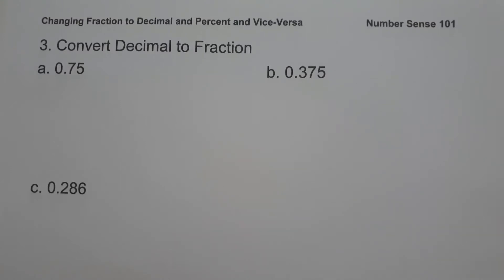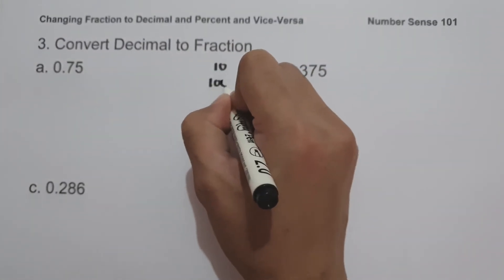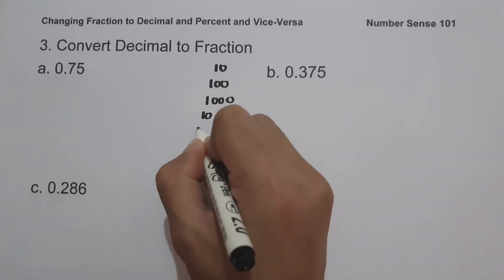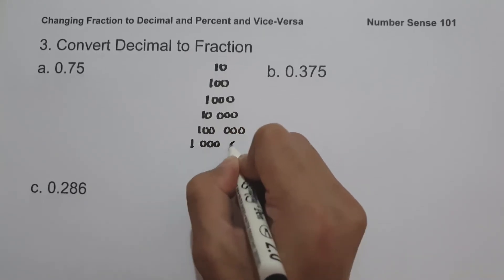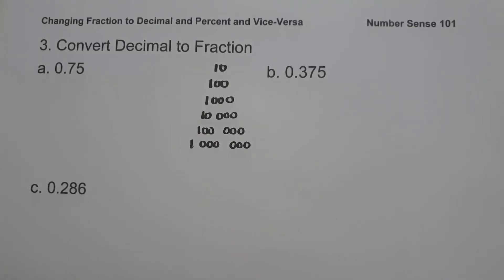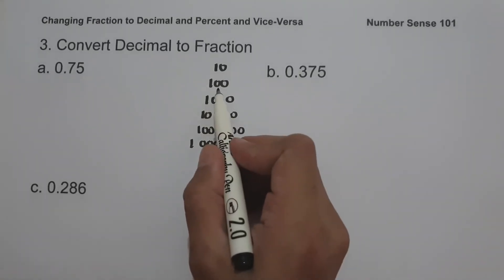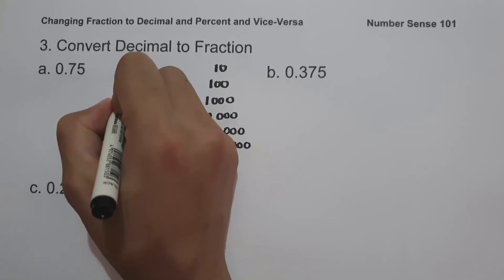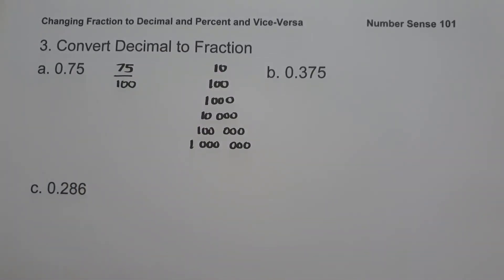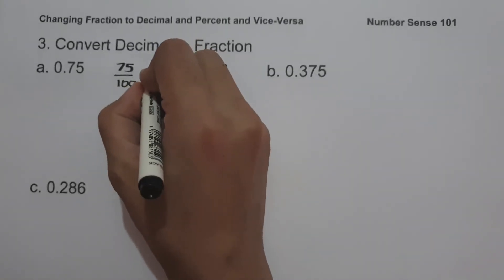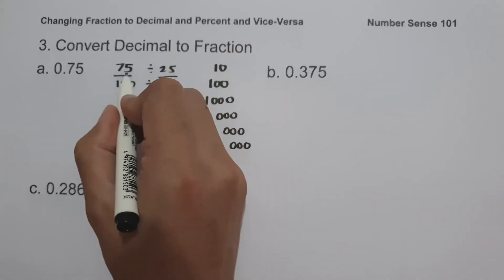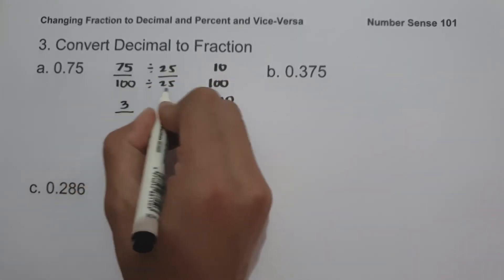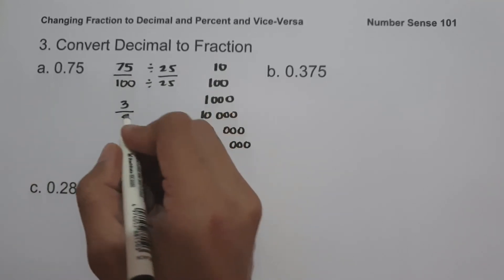On the third set of examples, we are going to convert decimal to fraction. In converting decimal to fraction, we familiarize ourselves with powers of 10 — 10, 100, 1,000, 10,000, 100,000, 1,000,000, etc. — and use the appropriate one as our denominator. On the first example, we have 0.75. Since we have two decimal places, we use 100 as the denominator, giving us 75 over 100. The greatest common factor is 25. So 75 ÷ 25 = 3 and 100 ÷ 25 = 4. So 0.75 in fraction is 3 fourths.